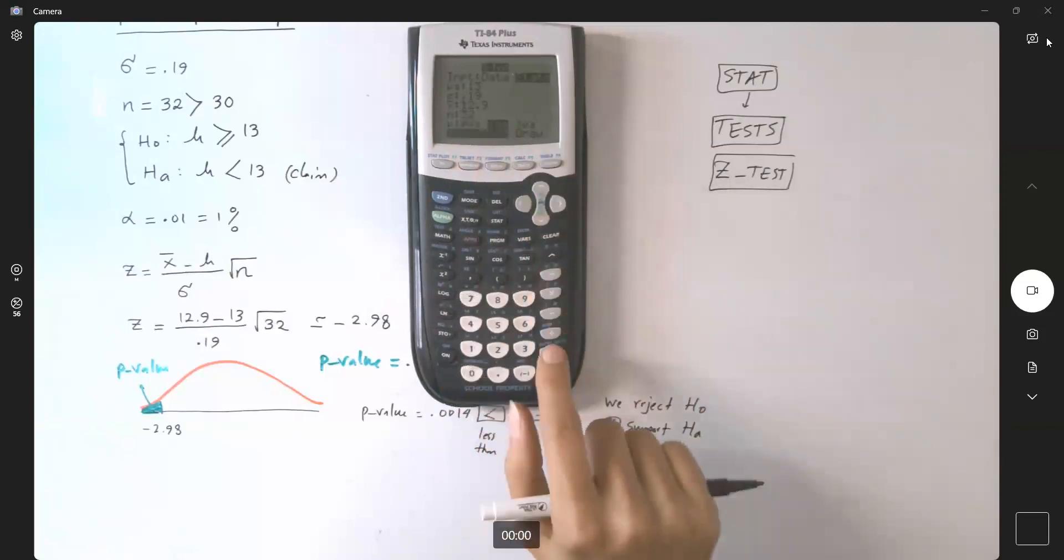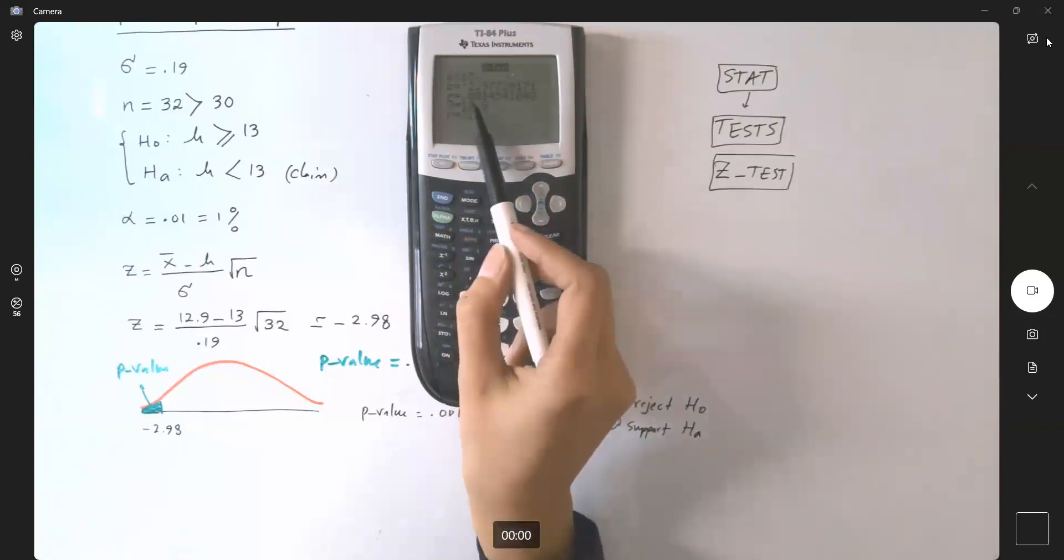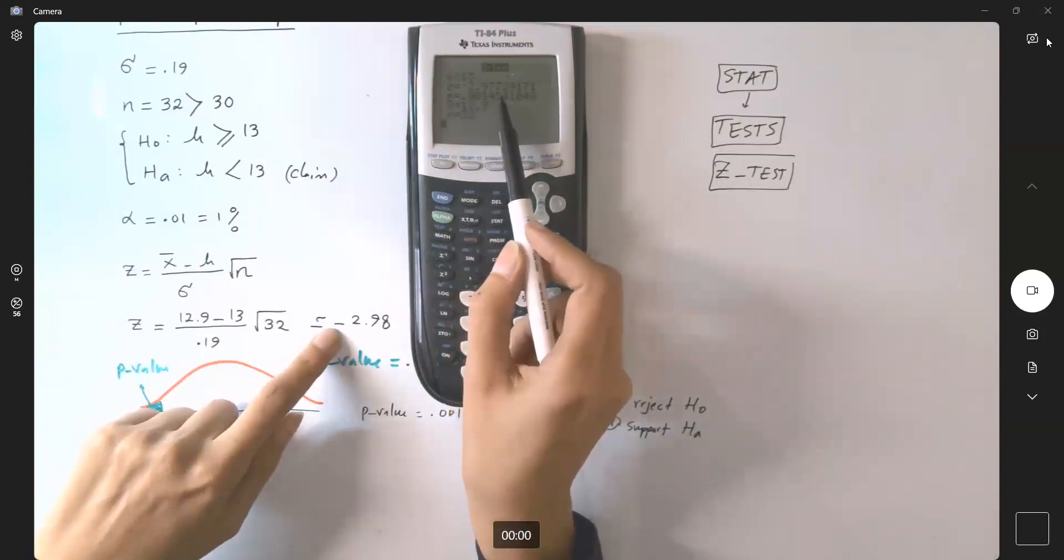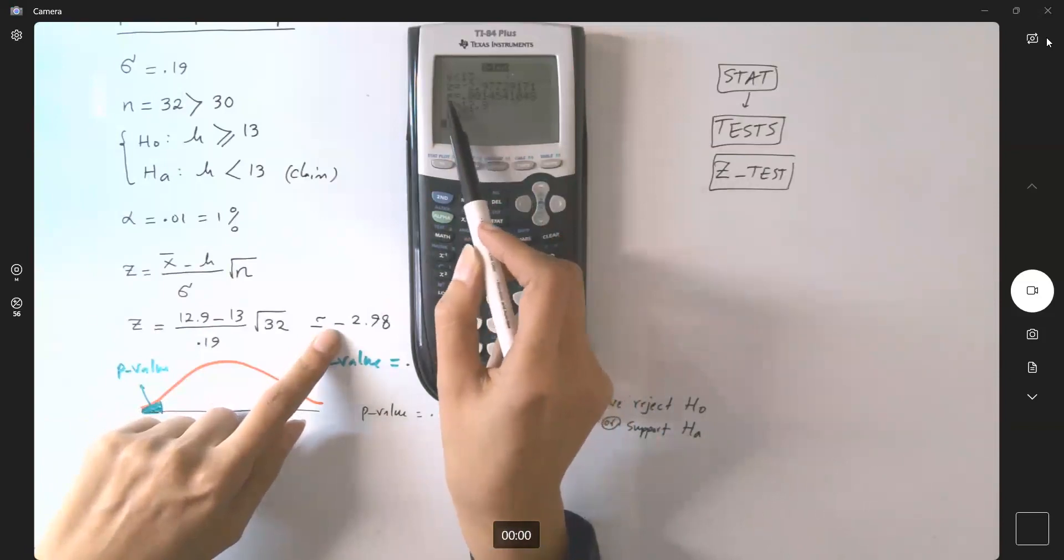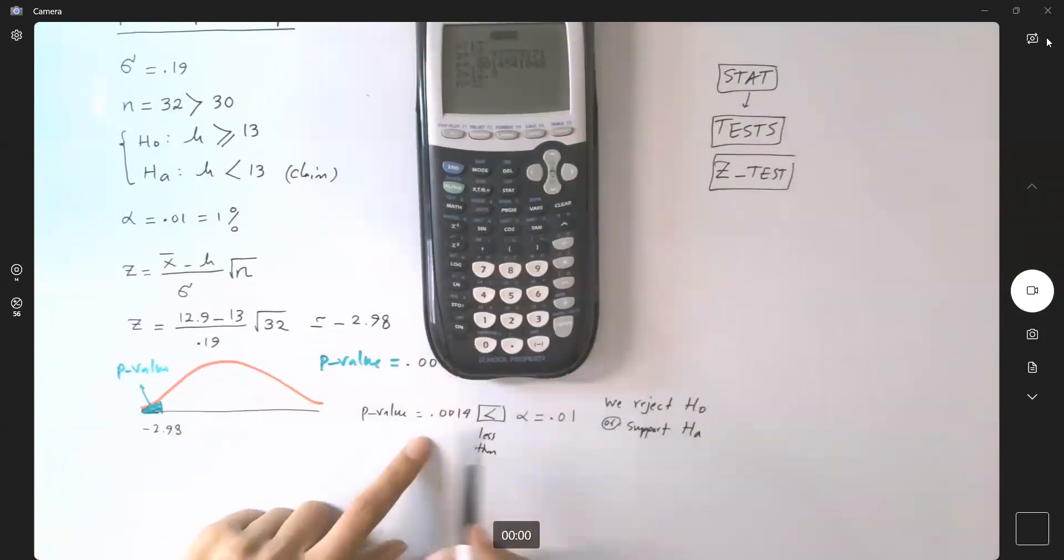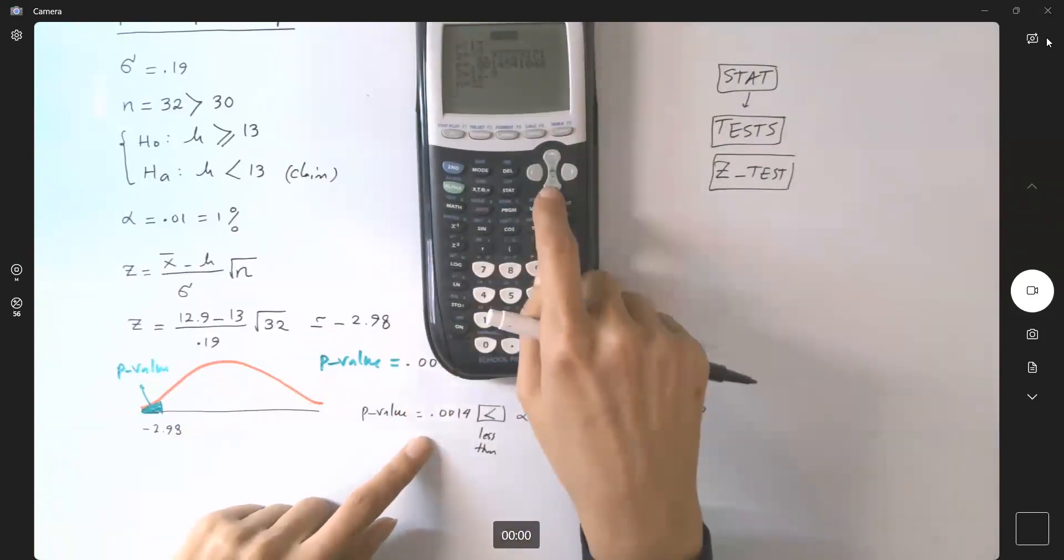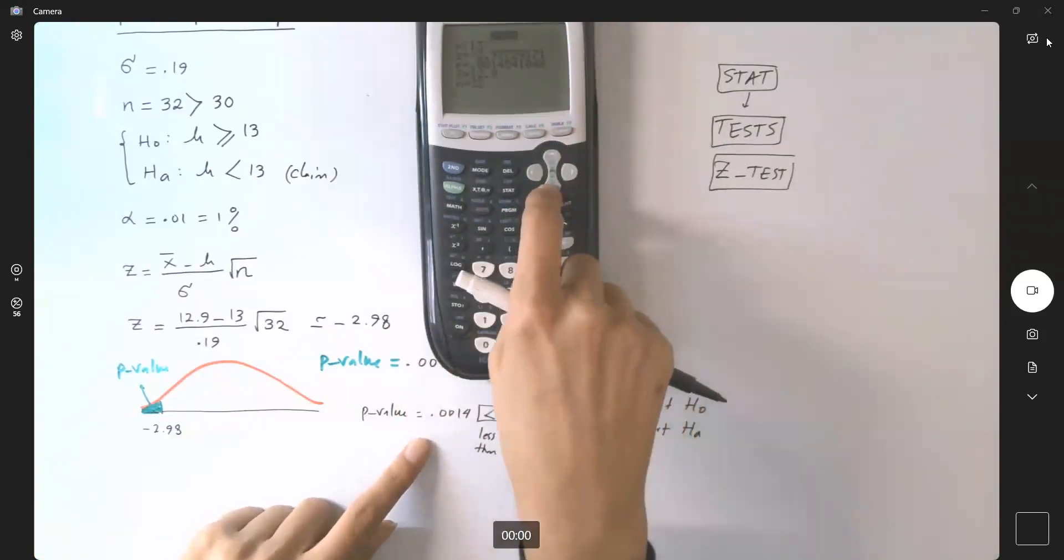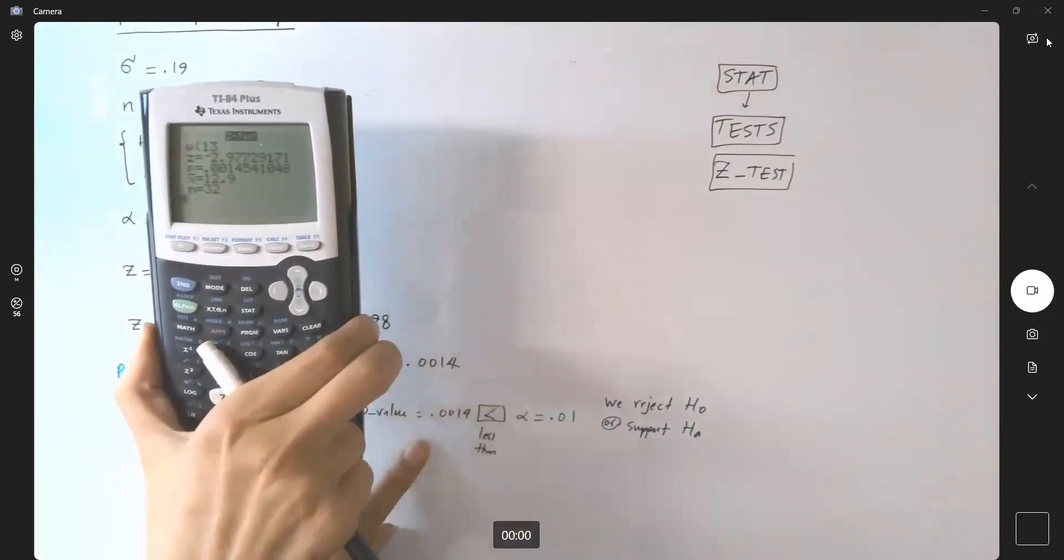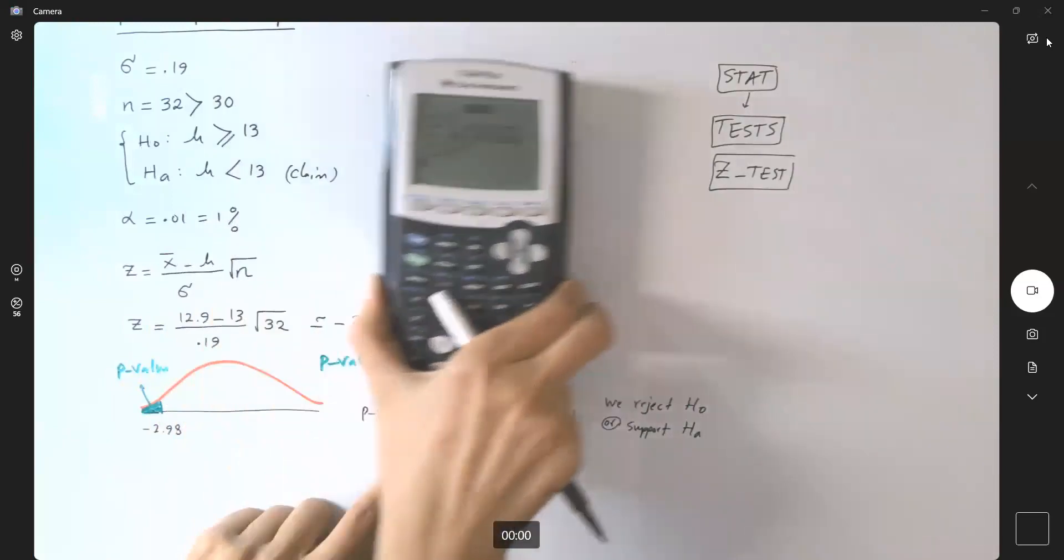Well, as you can see, the value of z, which is negative 2.98. It found the p-value for you, 0.0014. And then you can also graph this, but using your calculator, it gives you all the information that you need here.